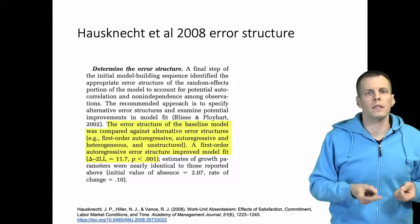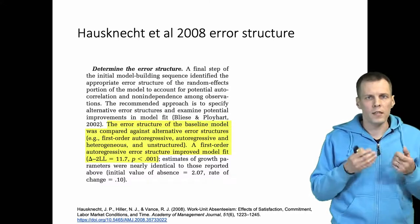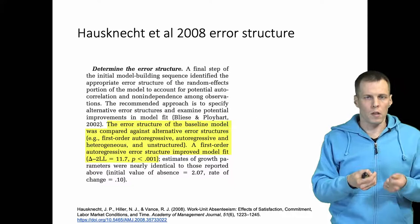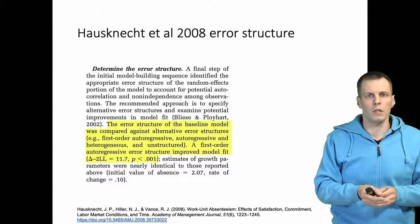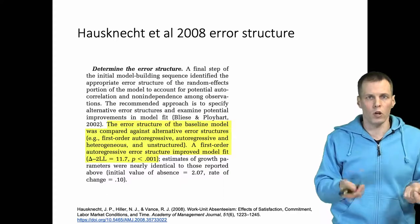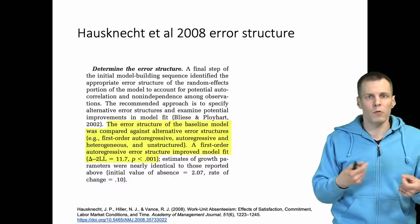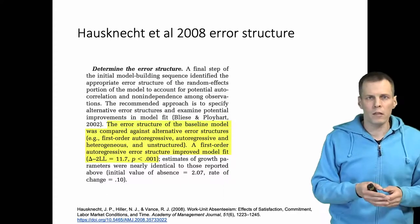And what you do basically is that you consider which error structures are theoretically justified. So typically autocorrelation is something that you should always consider if you have longitudinal data. So at least that should be compared. Then maybe you have heteroscedasticity.